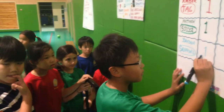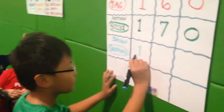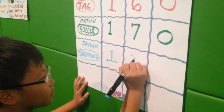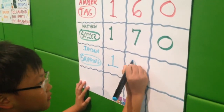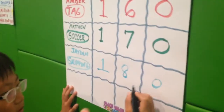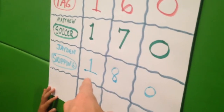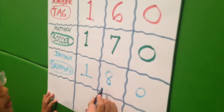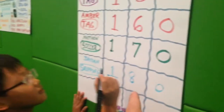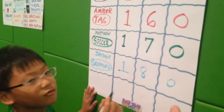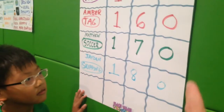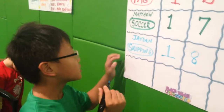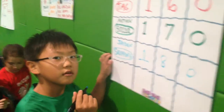Here we have Jayden. Everybody, Jayden is going to write his heart rate down. Go ahead, Jayden. So 100 and... one is in the hundreds column, eight is in the tens column, and zero is in the ones column — eight is in the tens and there's nothing in the ones, so zero. What activity were you doing, Jayden? Skipping. So you're 180 beats a minute. Well done.